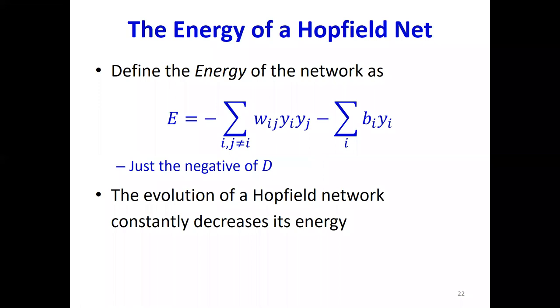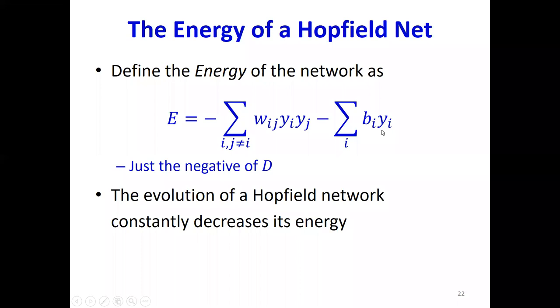I can now introduce the notion of the energy of the network. The energy is defined as the negative of this term D: E = minus of the sum over all pairs of neurons of W_ij times Y_i Y_j, minus the sum over all neurons of Y times B. Every time a neuron flips, this E is going to decrease because E is the negative of D, and D was increasing. So every time the network evolves, E is going to decrease.